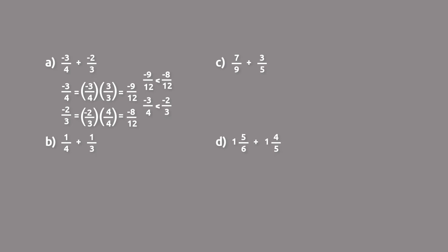For part B, we have 1 fourth and 1 third. One thing we can recognize is that when we have the same numerator, the greater the denominator, the less the value. So we should recognize right away that 1 fourth is less than 1 third, because we're dividing by a bigger number. We'll go ahead and put them over a common denominator just to verify this.